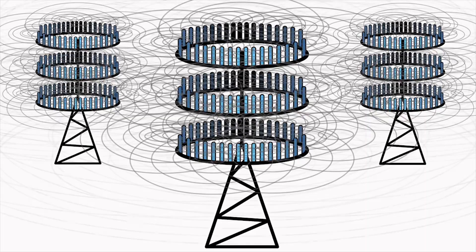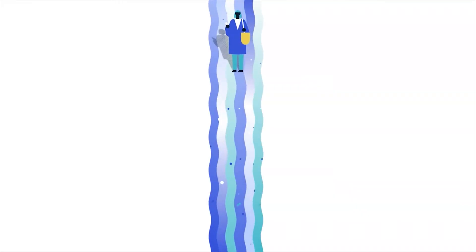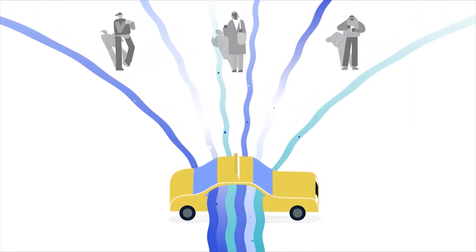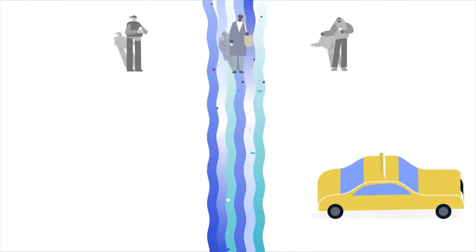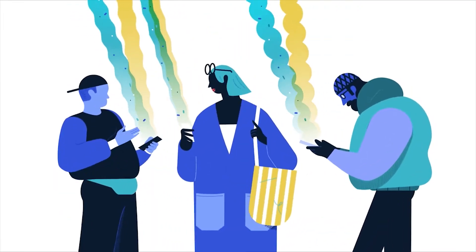This brings us to another technology: beamforming. It takes the signal and sends it towards that specific user. In simple words, it aims the signal rather than spraying it everywhere in every direction, which leads to minimized interference.